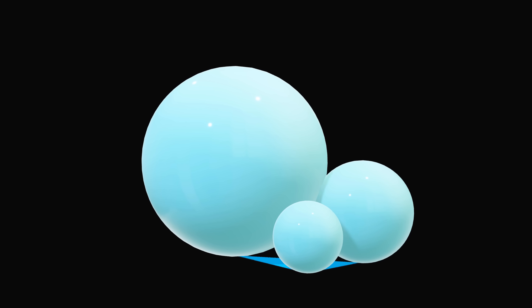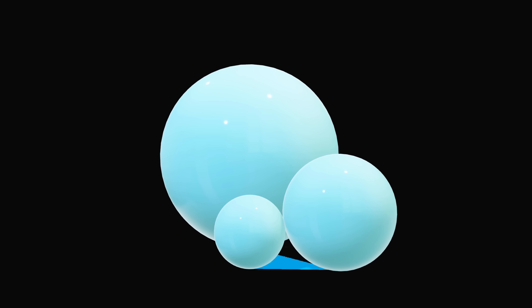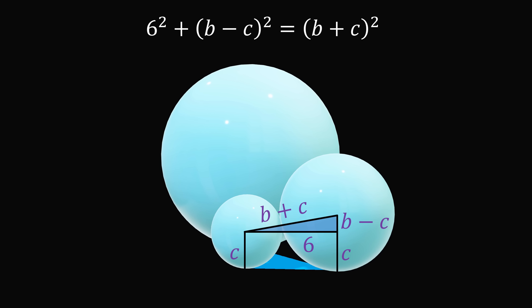We finally make this construction one more time on these two spheres. We'll end up with a similar equation for these radii lengths and the length 6. So we have 6 squared plus the quantity b minus c squared is equal to the quantity b plus c squared.